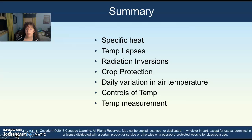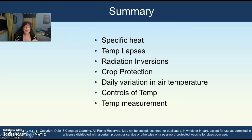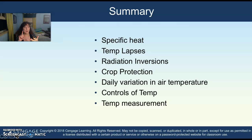In summary of chapter three, we have gone over a lot. Make sure you feel good about specific heat; temperature lapses due to averaging; radiation inversions that heat the air above while the ground stays cold; crop protection during those radiation inversions; daily temperature variation and controls of temperature — latitude, land-water distribution, ocean currents, and elevation; and temperature measurement by the different thermometers we use. Hope this helps — this is the end of chapter three.